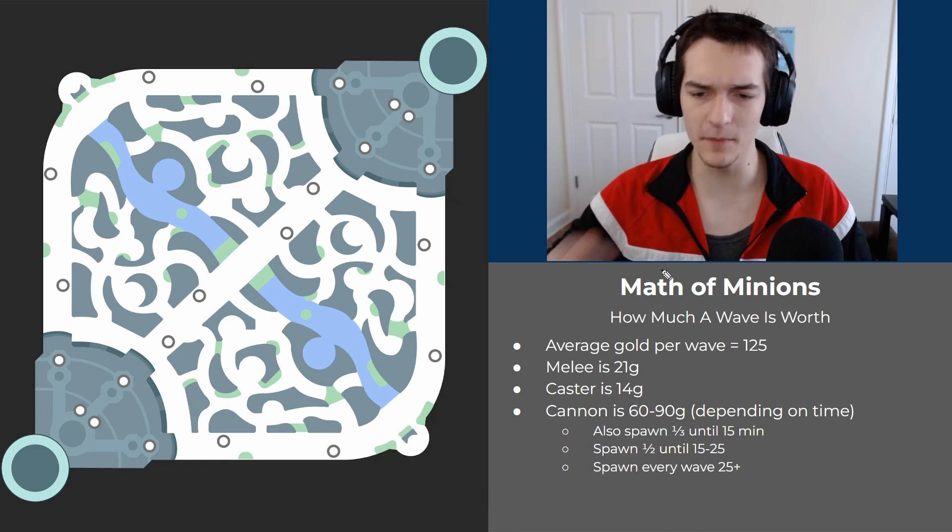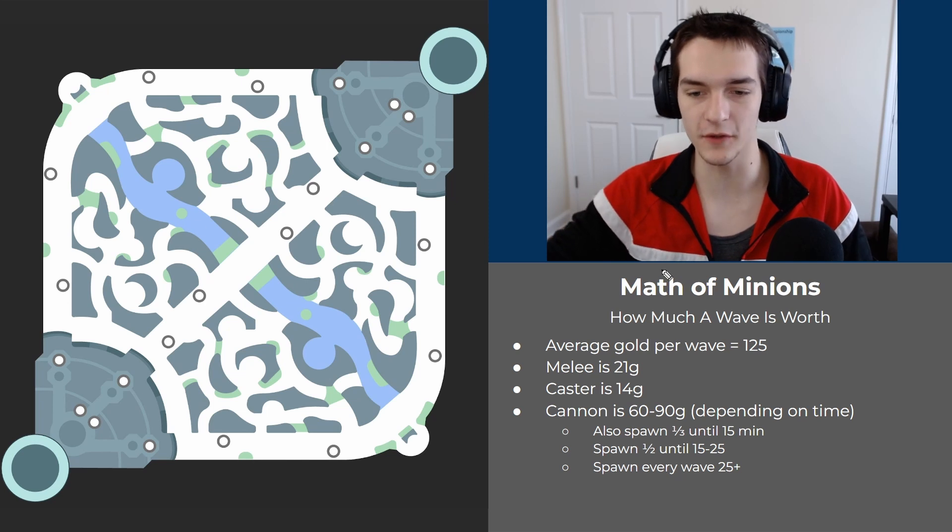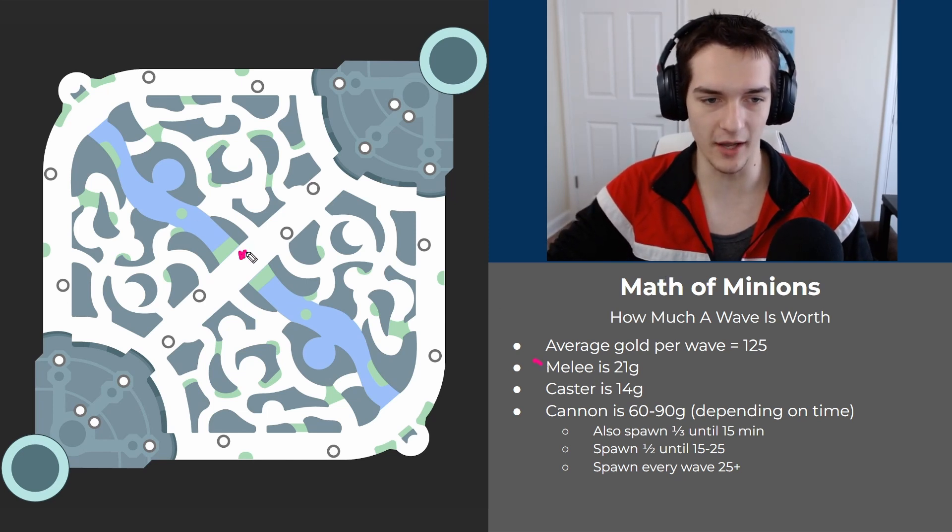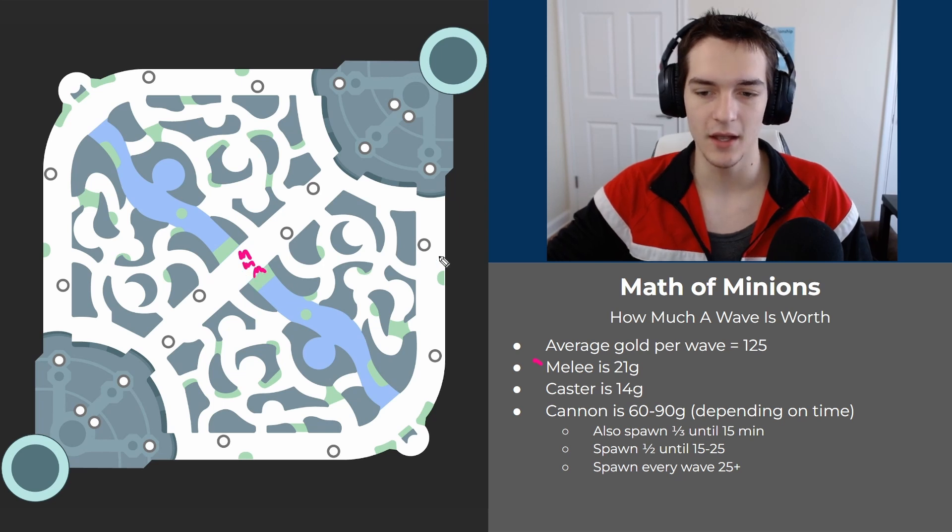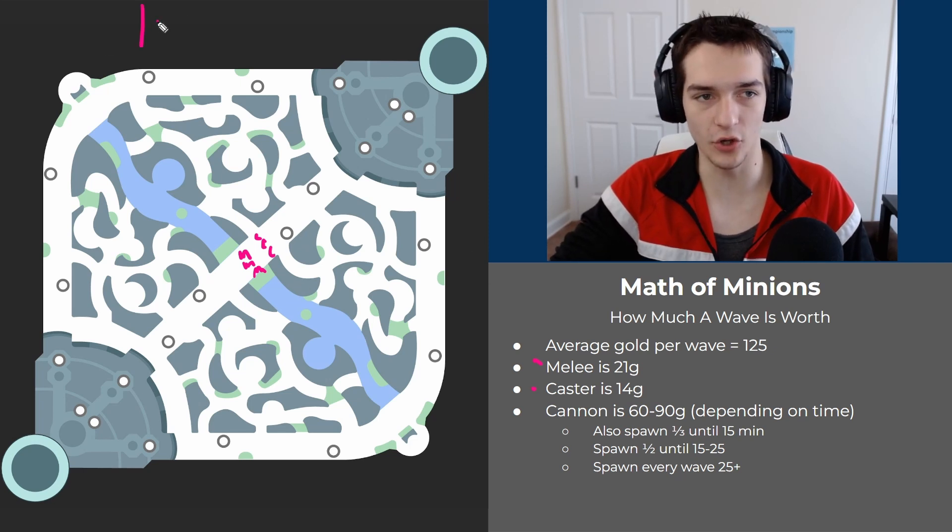The very first thing I want to talk about is literally just how much a minion wave is worth. Melee minions are worth 21 gold, so in a normal minion wave we have three melee minions and three casters. A normal minion wave is worth 105 gold plus a very significant amount of XP.